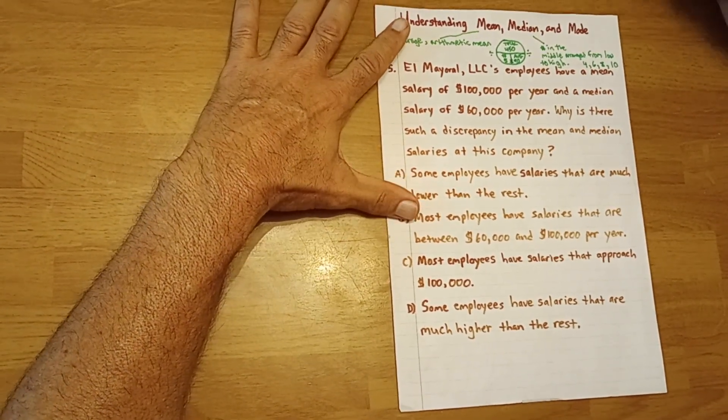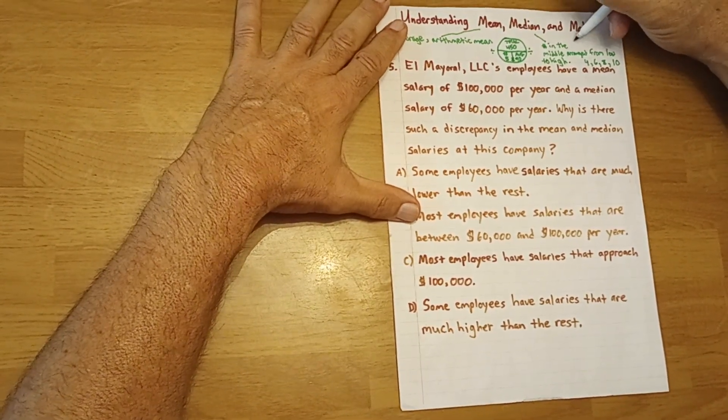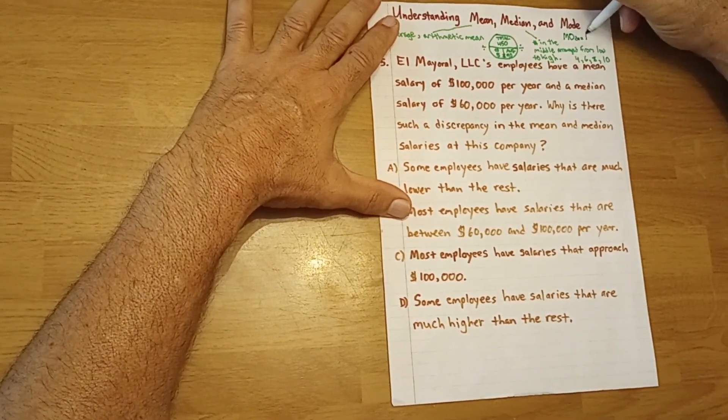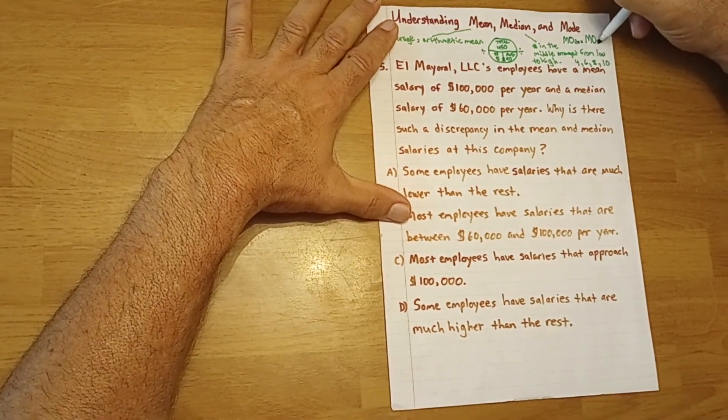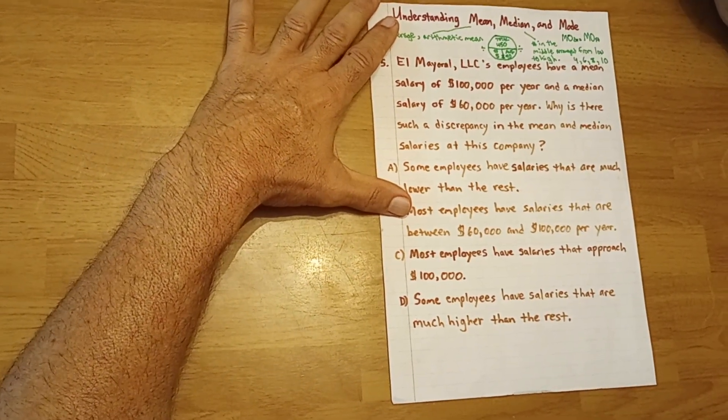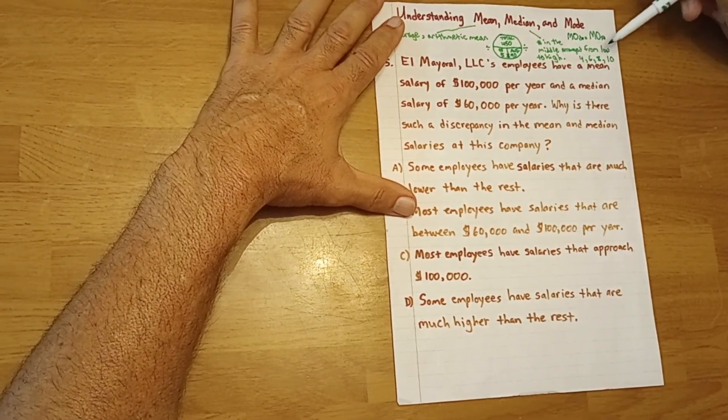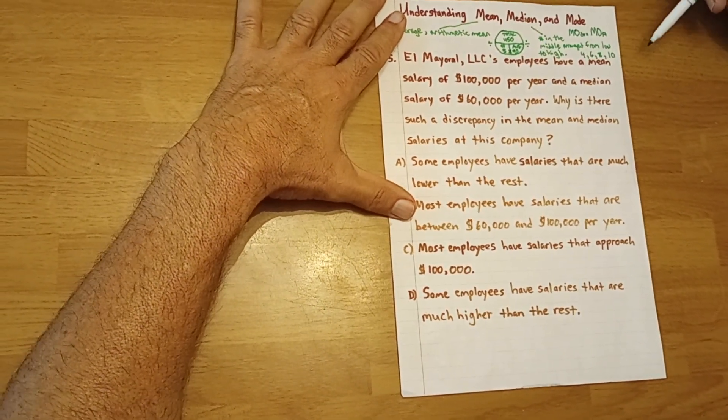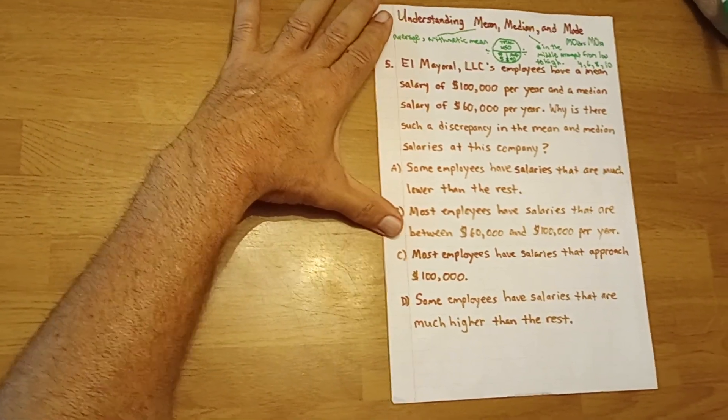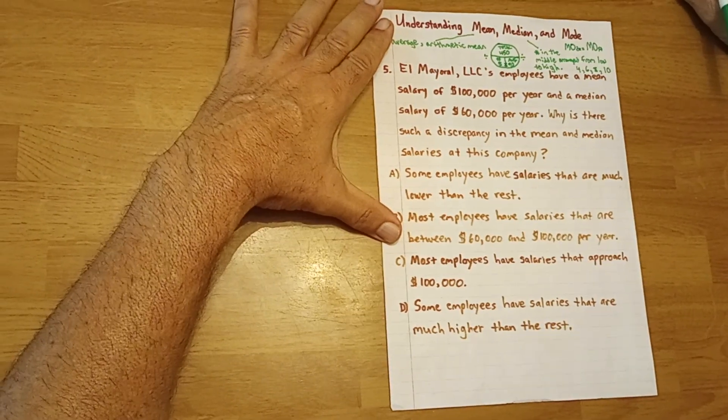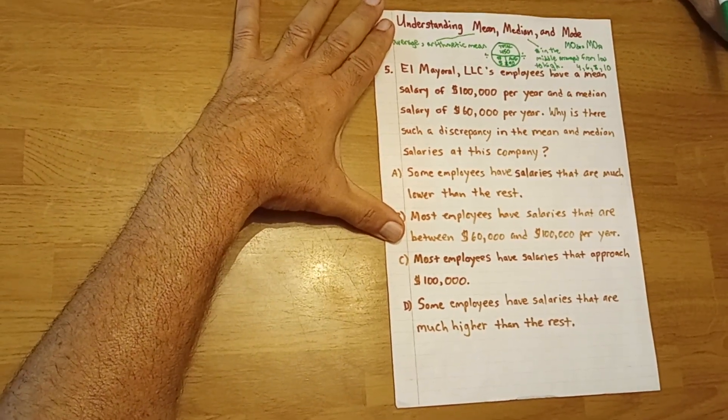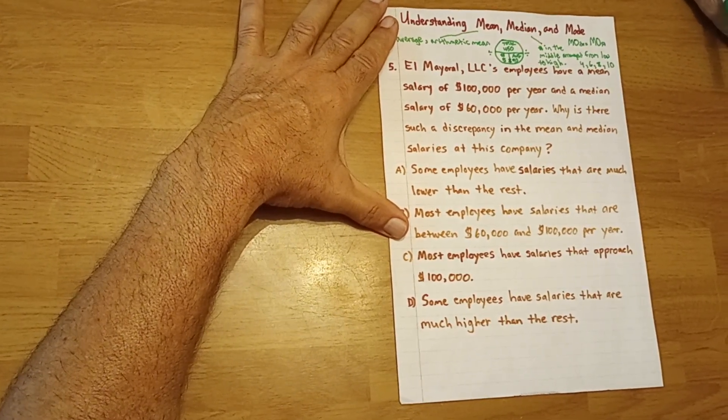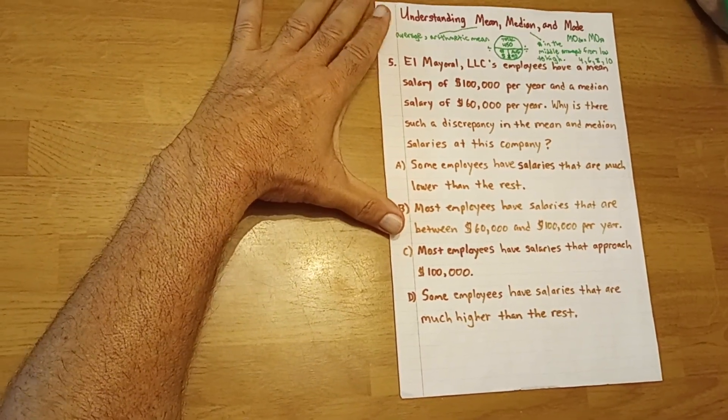Mode is simply the most frequent numbers. So here, one way I remember it is big M, big O: mode equals most. So the most frequent numbers. If we have a set of 5 numbers, in this case 4, 6, 8, 10, and 10 again, then 10 would be the mode because it occurs twice. It is important to add that there might be more than one mode. So if we had, for instance, 4, 4, 6, 10, 10, then the mode would be both 4 and 10 because they would appear twice.